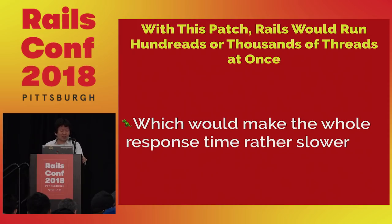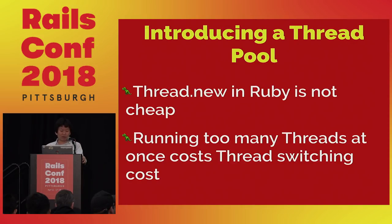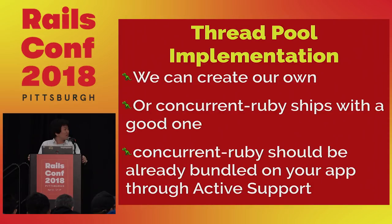But if you run hundreds or thousands of threads, the response time actually gets worse — because threads are costly, and switching between threads takes time. In order to make it faster, we need to control the number of running threads. To do this, we introduce something called a thread pool. Rails already ships with an implementation inside the concurrent-ruby gem, so we can just use that.